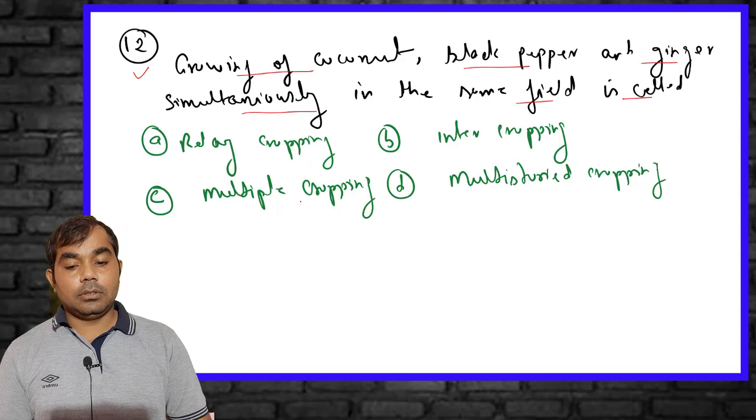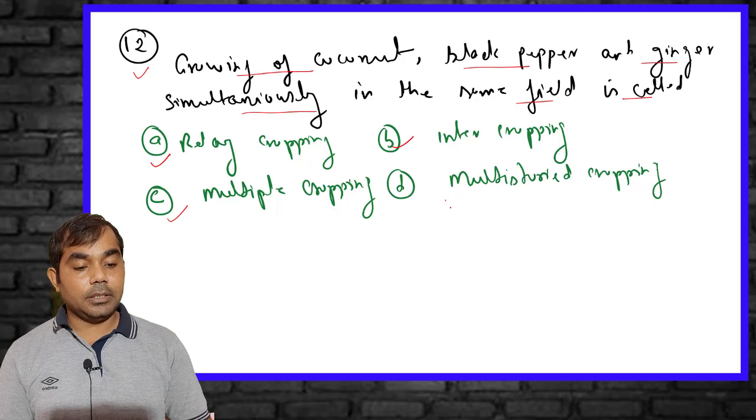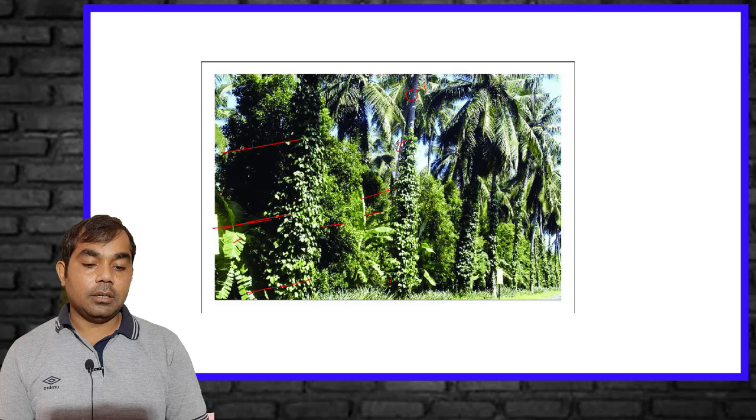The twelfth MCQ asks: growing coconut, black pepper, and ginger simultaneously in the same field is called what — relay cropping, intercropping, multiple cropping, or multi-storied cropping? The right answer is multi-storied cropping. It utilizes different layers on the same unit of land — coconut at the top layer, black pepper and banana at different layers. This type of intensification is mainly found in coastal areas like Kerala and Karnataka.